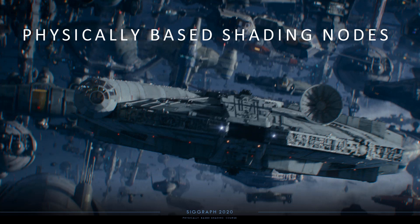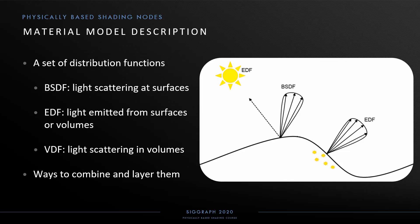At its core, the material model in this library is a set of distribution functions capturing the scattering and emission of light at surfaces and in volumes. This abstraction exists already in high-level shading languages like OSL and MDL. In OSL there is a collective closure type for all the various light interactions, whereas in MDL this is more strictly typed with three distribution function types: BSDFs for light scattering at surfaces, EDFs for light emitted from surfaces or volumes, and VDFs for light scattering in volumes.